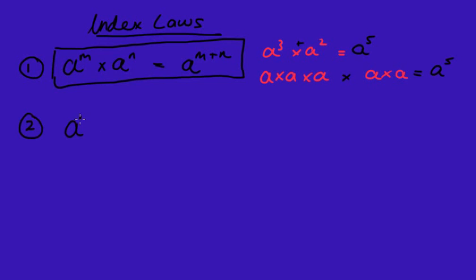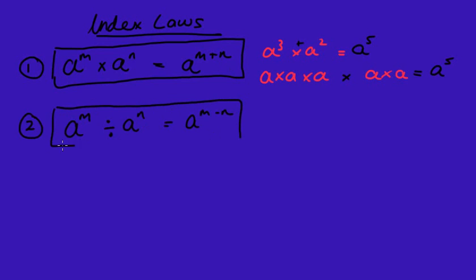Rule number two is the opposite of times, so that's divide. And the opposite of add is subtract, so the rule is pretty much just the opposite of the first one. An example: a cubed divided by a squared.